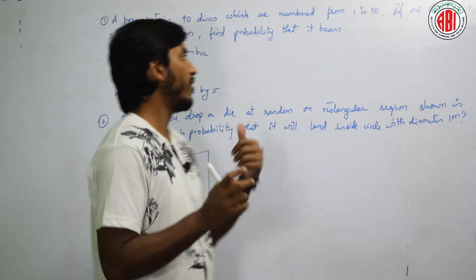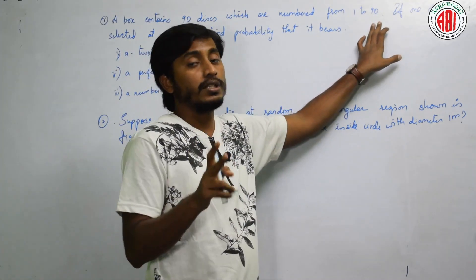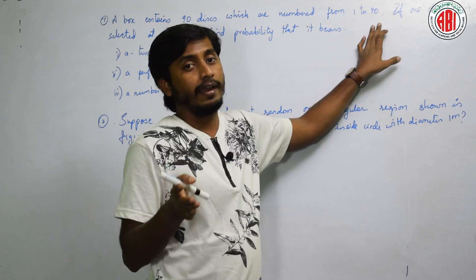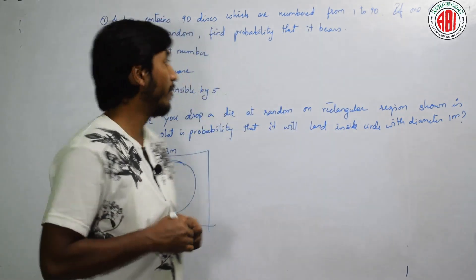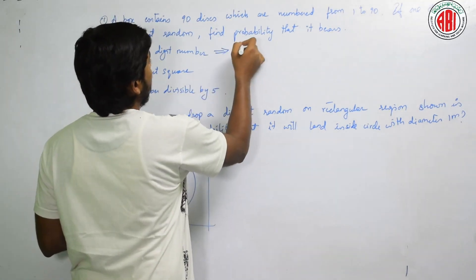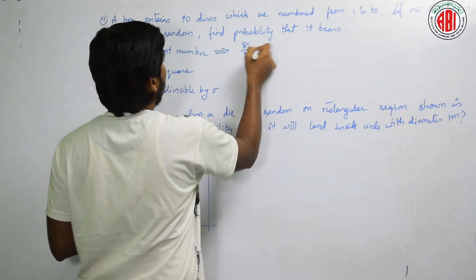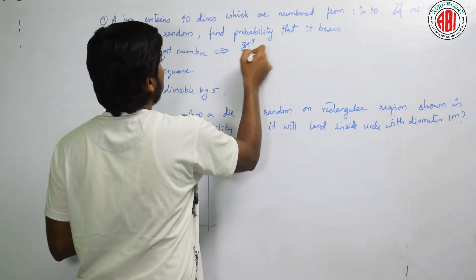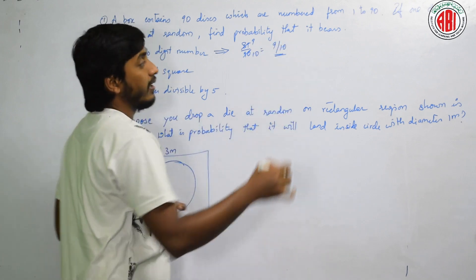See here. 1 to 90 me to 90 number se. 2 digit number kaha se start hotha? 10. Starting 9 single digit number hai. So 2 digit number kitne hai? That is 90 minus 9 is 81 by 90. You can cancel. 9 nines, 9 tens. Answer is 9 by 10. Isn't it easy?